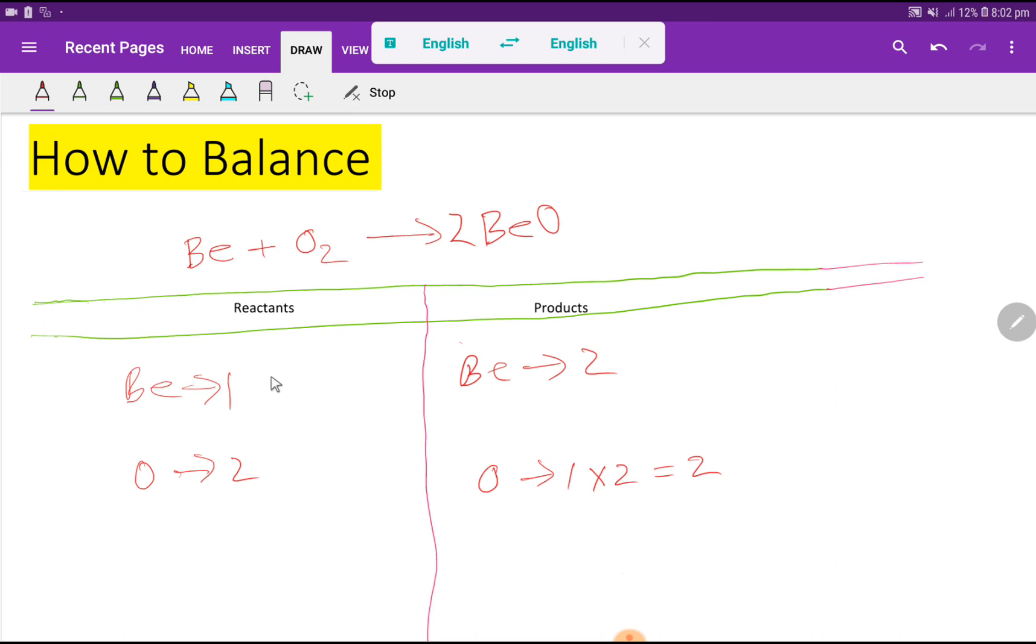To balance the beryllium what can I do? I can multiply here by 2 that gives me 2. These 2 must come before this beryllium that is here.